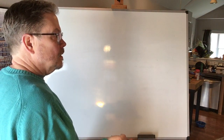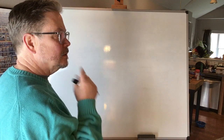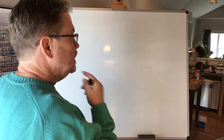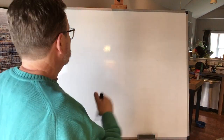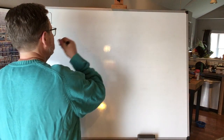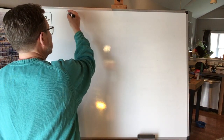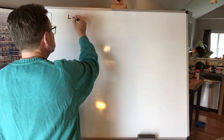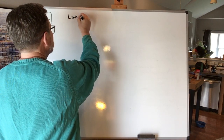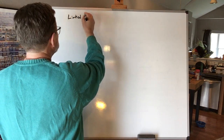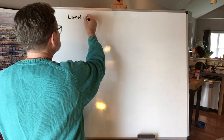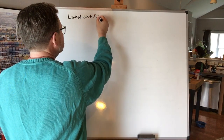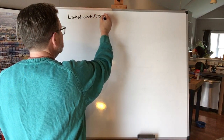We'll first get up to cruising altitude — maybe 40,000 feet — and look at it from above as an ADT: an Abstract Data Type. Linked list, abstract data type.